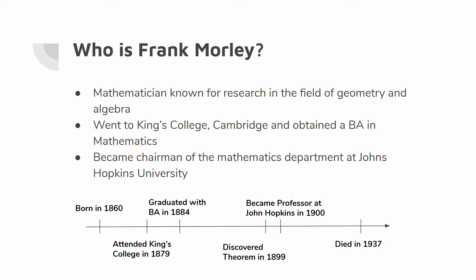We are going to talk about the man who discovered the theorem, Frank Morley. Frank Morley was a well-known mathematician, known for his research in the field of geometry and algebra. In 1879, he attended King's College, Cambridge, and graduated with a B.A. in mathematics. One day as he was researching, he happened upon Morley's Theorem. In fact, the discovery of the theorem was a complete accident, and hence it is known as Morley's Miracle.